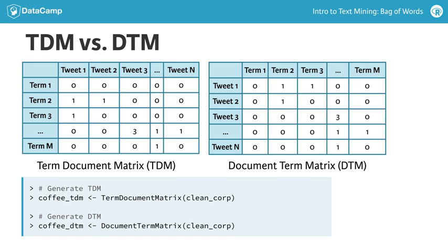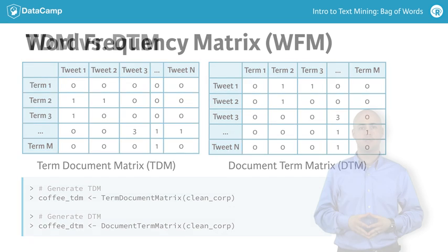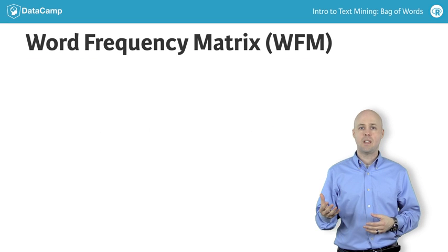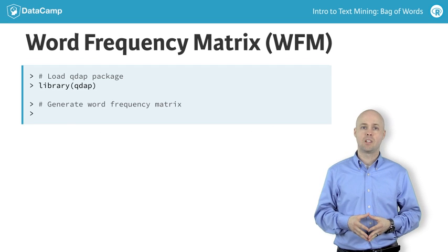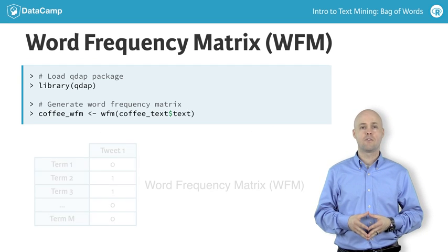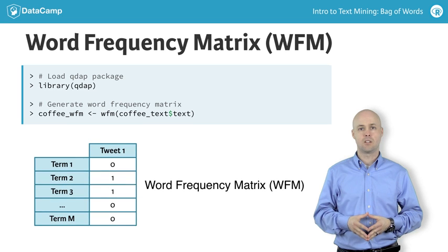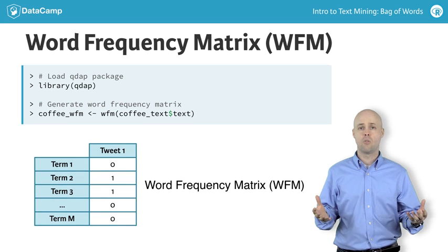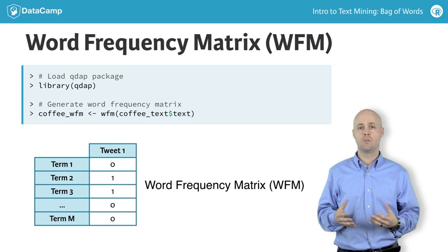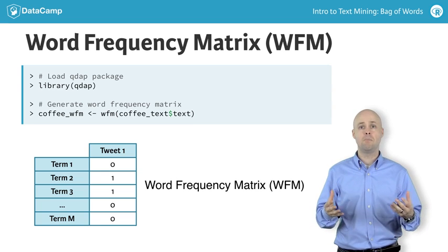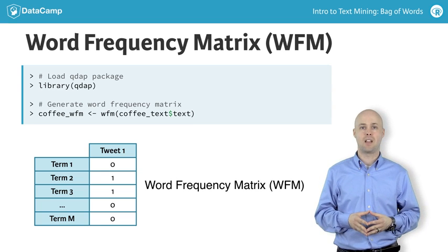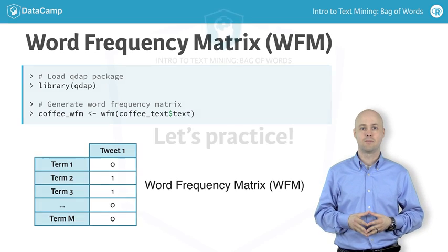However, other frequency measures do exist. The QDAP package relies on a word frequency matrix. This course doesn't focus on the word frequency matrix since it is less popular and can be made from a term document matrix.